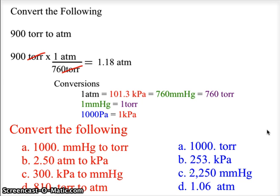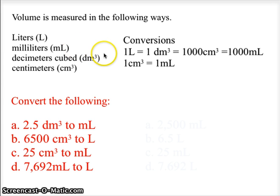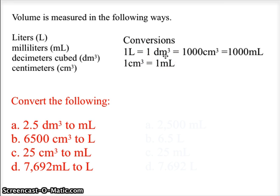Now let's move on to volume. As discussed early in the first semester, we measure volume in liters and milliliters when dealing with liquids and gases, and in decimeters cubed and centimeters cubed when dealing with gases and solids. The key equivalencies are: 1 liter equals 1 decimeter cubed, which equals 1,000 centimeters cubed, which equals 1,000 milliliters. And 1 centimeter cubed equals 1 milliliter.